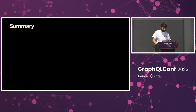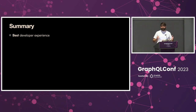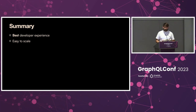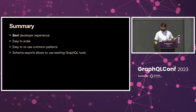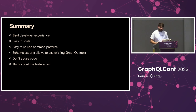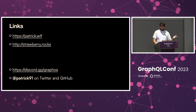In summary: Code First brings the best developer experience. It's easy to scale GraphQL APIs by modularizing code and reusing generic types for common patterns like pagination. You can use schema export to leverage any GraphQL tool in the ecosystem. But don't abuse code — think about the features you want to implement first. Thanks everyone. I've left some links if you want to follow me, check out Strawberry, or chat about Apollo GraphOS on Discord.